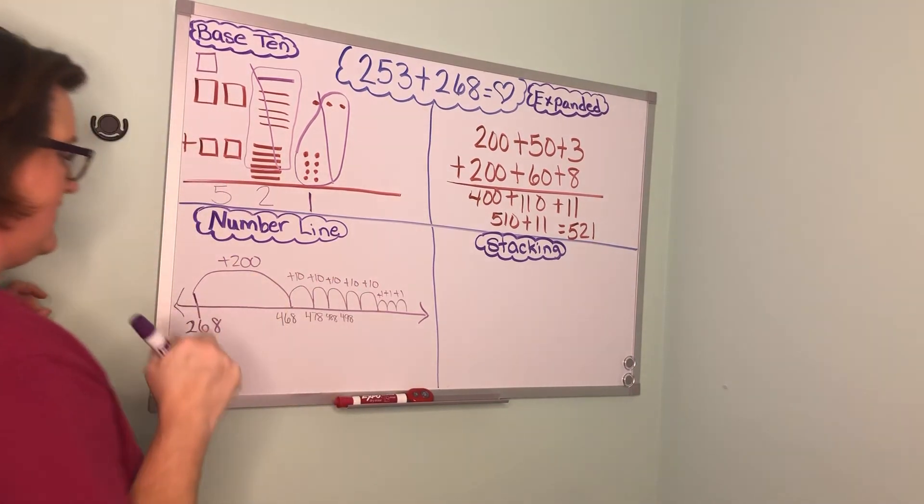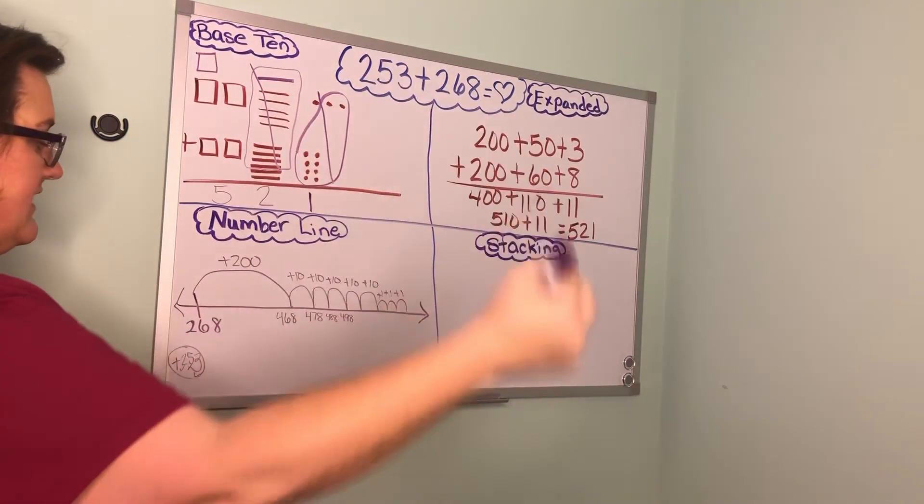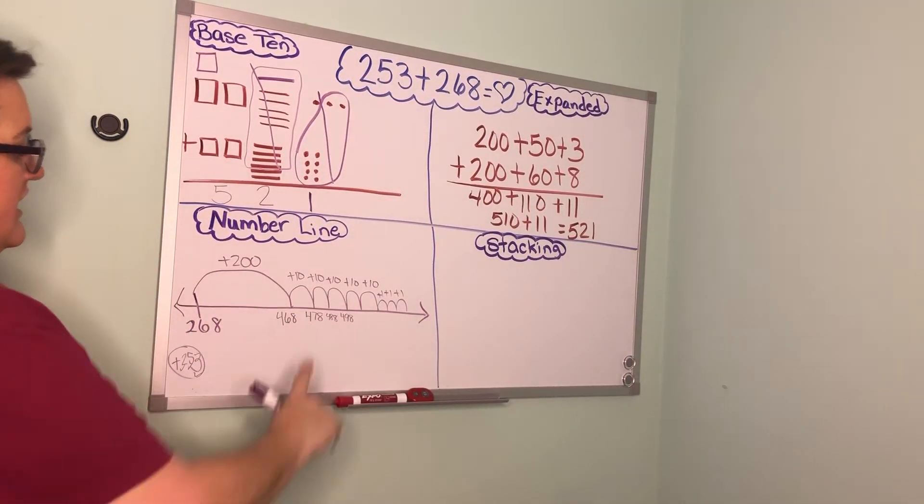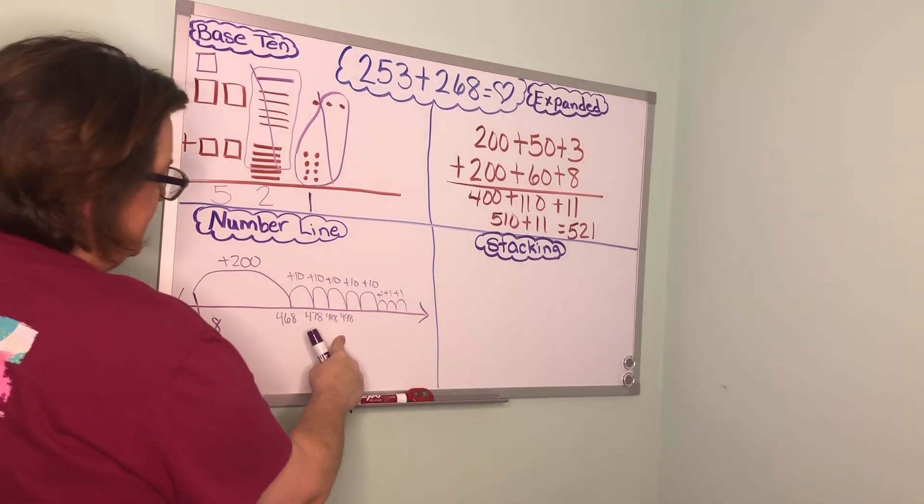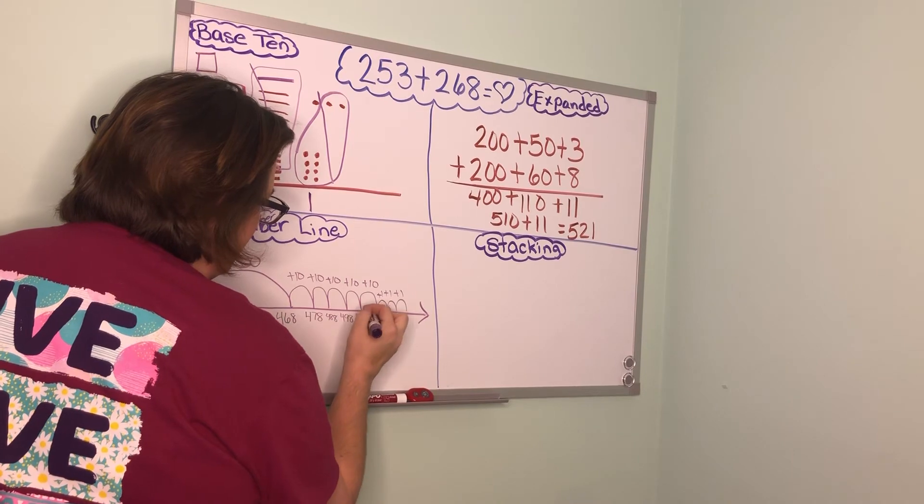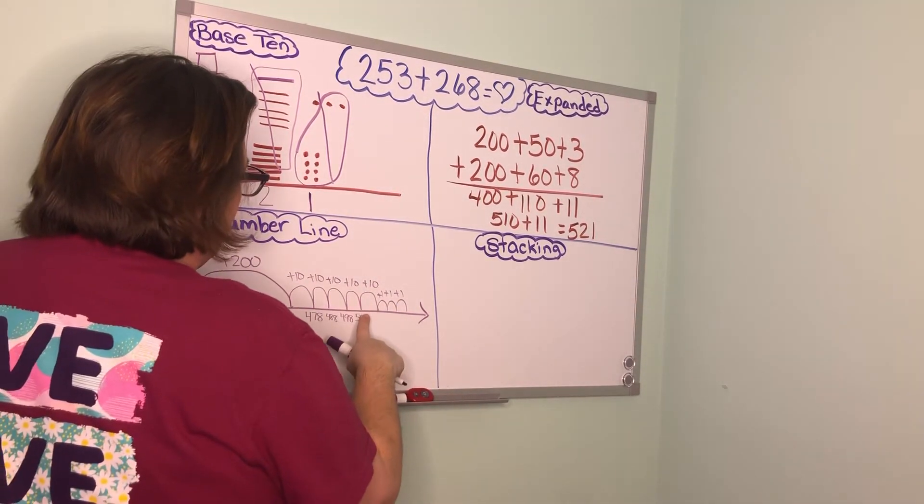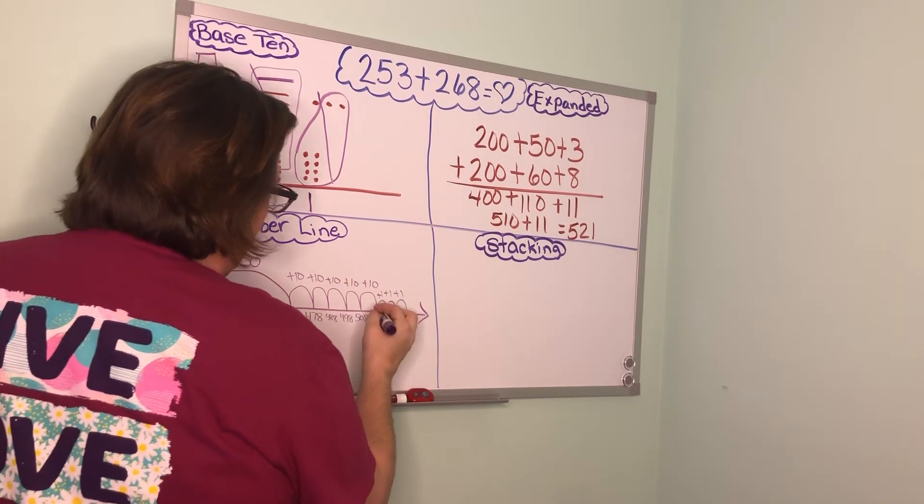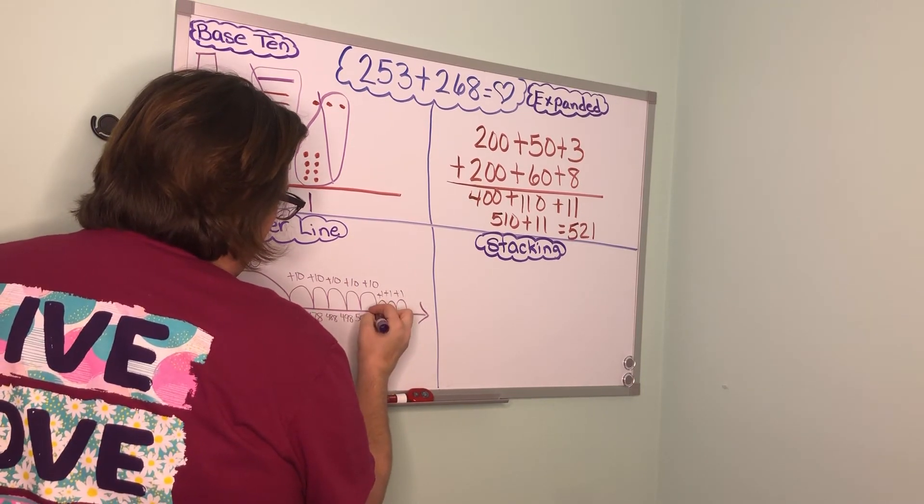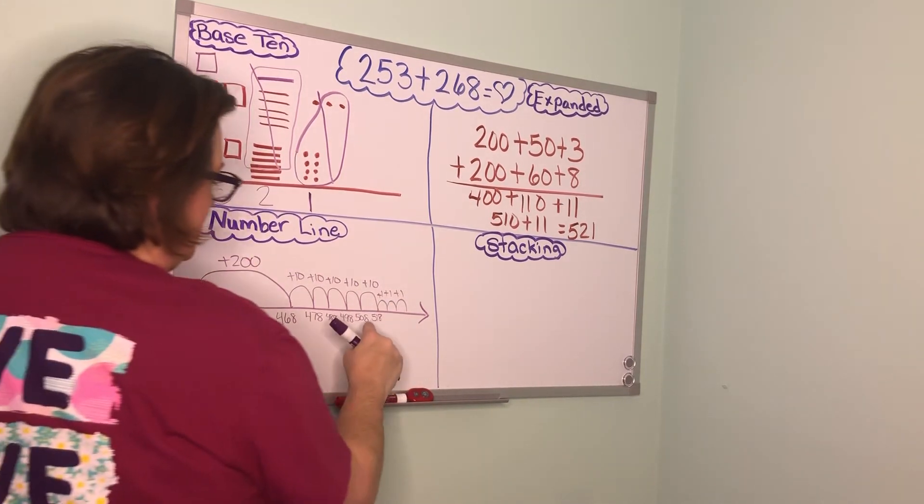This next one you have to be careful because in this case your tens and your ones change because you're moving 100, you're going into the 500s. So 498 plus 10 becomes 508. I'm sorry your ones is not changing. And then 508 plus 10 becomes 518. And now we're ready to just hop those singles.